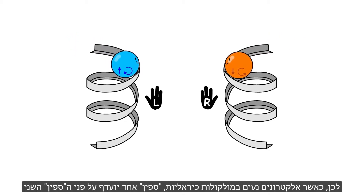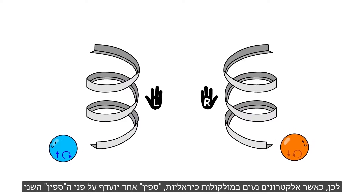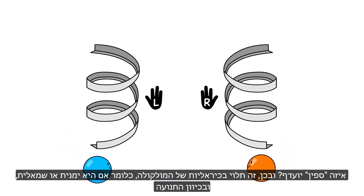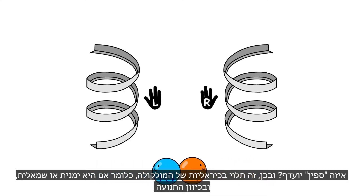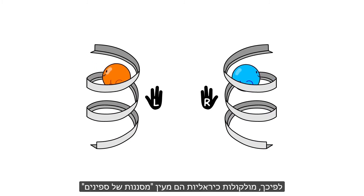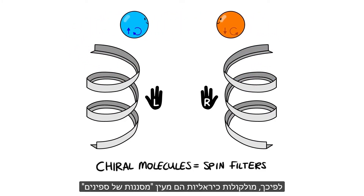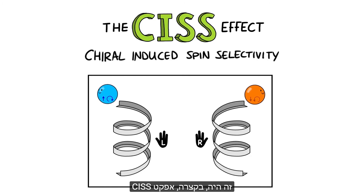Therefore, when an electron is transferred through chiral molecules, one spin is preferred over the other. Which spin is preferred depends on the handedness of the molecules — right or left hand-like symmetry — and on the direction of motion. So, chiral molecules are like spin filters. This is the CISS Effect.